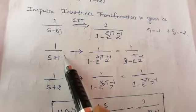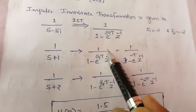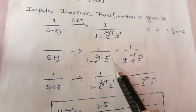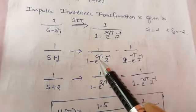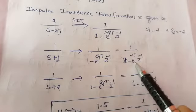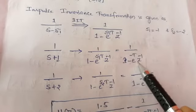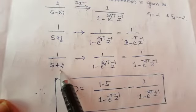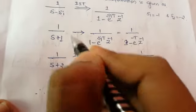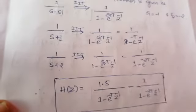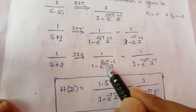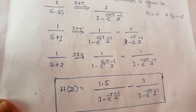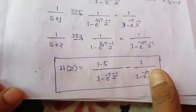Applying IIT to the first term: 1 divided by (S plus 1) transforms to 1 divided by (1 minus e^(-T) * z^(-1)), since S_1 equals minus 1. Similarly, the second term 1 divided by (S plus 2) transforms to 1 divided by (1 minus e^(-2T) * z^(-1)), since S_2 equals minus 2.